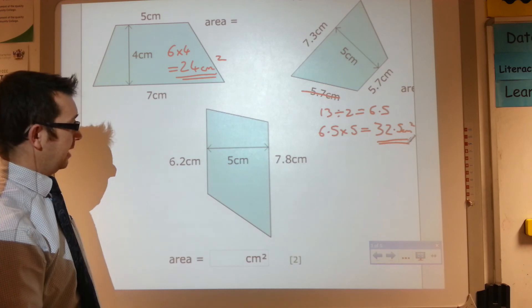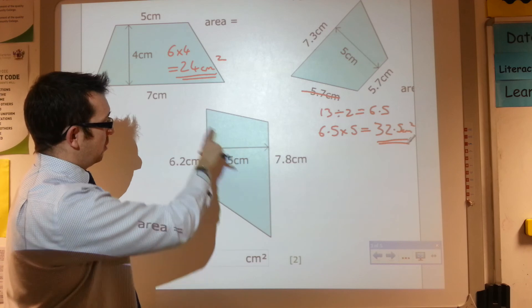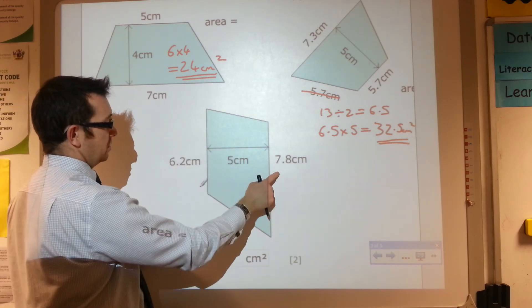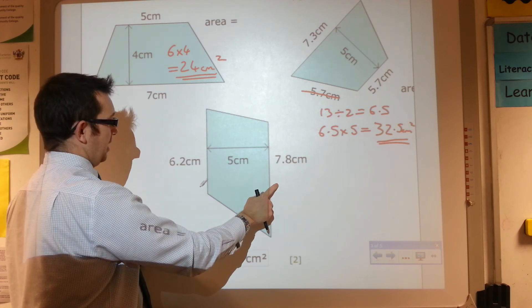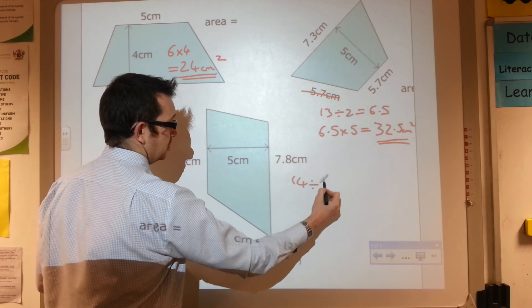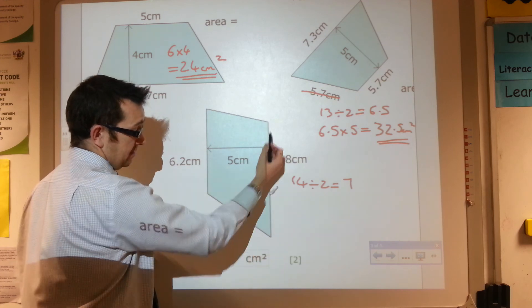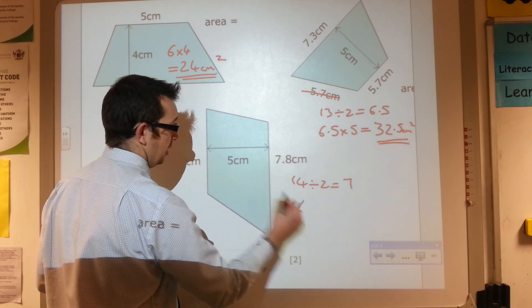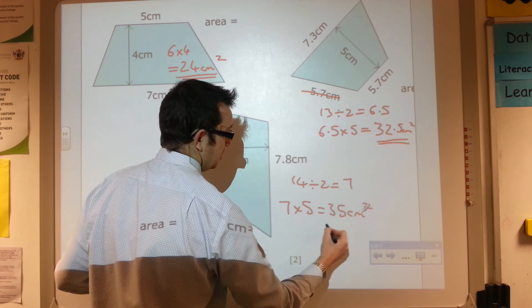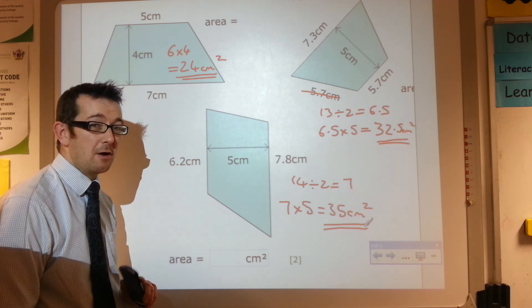And finally down here, same sort of idea. It almost looks like a parallelogram here, but it's not quite. So I need to find the average of these, so I'm going to add them together. 6.2, 7.8, so that is 14. So I need to do 14 divided by 2 is 7. So that average length is 7. So now I'm doing 7 times the height. 7 times 5 is 35 centimeters squared. So hopefully you now know how to find the area of trapezium.